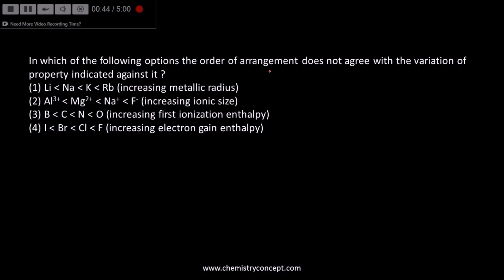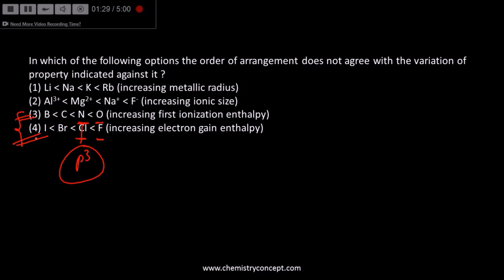The next question asks which is not the correct order. Looking at option 3: the ionization energy of nitrogen is more than oxygen because nitrogen has a half-filled p³ configuration, making it difficult to remove an electron. In option 4, the electron gain enthalpy of chlorine is more than fluorine because fluorine's size is too small. Both options 3 and 4 should be correct as neither explains the variation correctly.